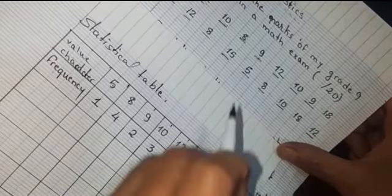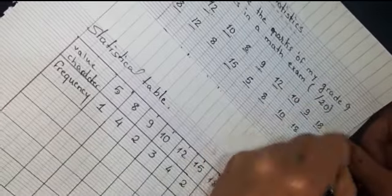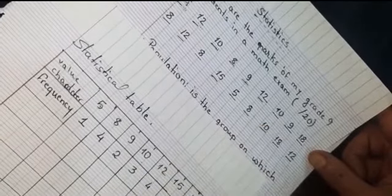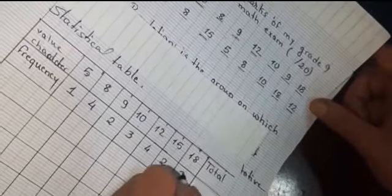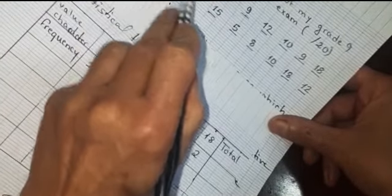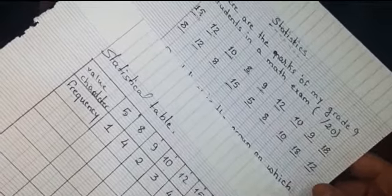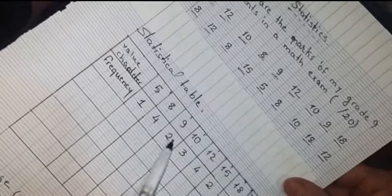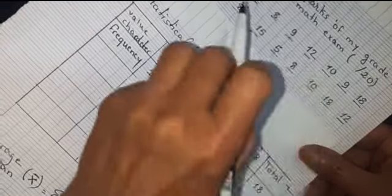For 18: it appears 2 times, so frequency of 18 is 2. The total must be 18. Let's count: 1 plus 4 is 5, plus 2 is 7, plus 3 is 10, plus 4 is 14, plus 2 is 16, plus 2 is 18. So I didn't skip any value.